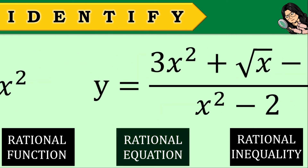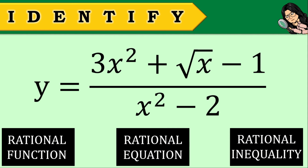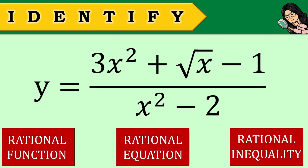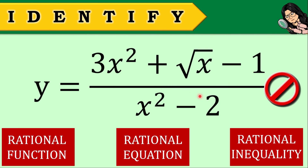And this last example — identify. This is an example of... none of these. None of these, because you have the presence of the radical sign making the numerator not a polynomial, which is an essential criteria for identifying the presence of a rational expression.